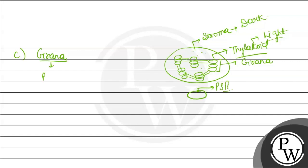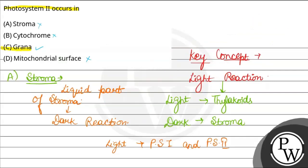So PS II कहाँ होगा? Grana में, यानी thylakoid की membrane पर. Option 4th दिया हुआ है mitochondrial surface. Mitochondria में photosynthesis नहीं होती है — instead, वहाँ cellular respiration होता है, not photosynthesis. So the final answer is C, grana. Hope you understood it well. Best of luck.